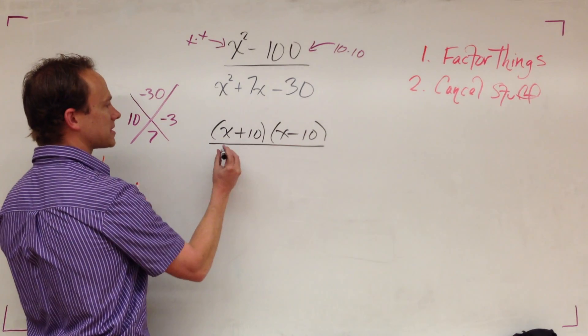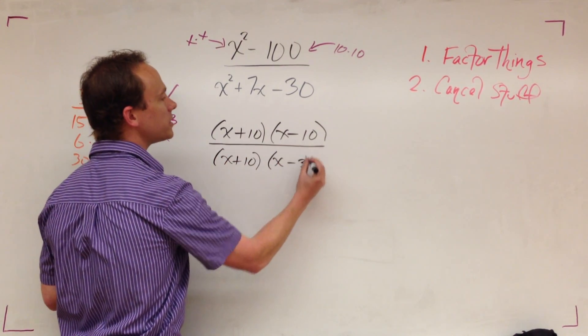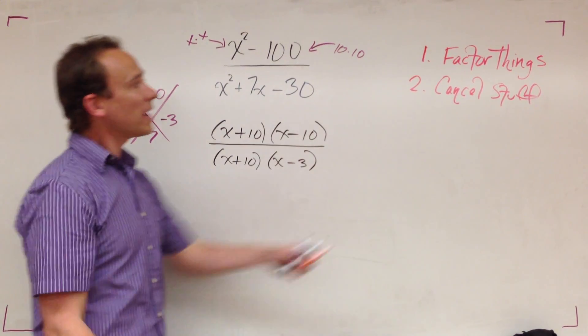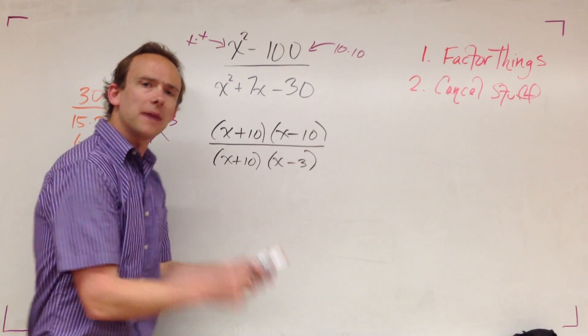I'm going to go 10 and 3. Realize one of these has to be negative, it's the 3. So what do we got? We got x plus 10 and x minus 3.